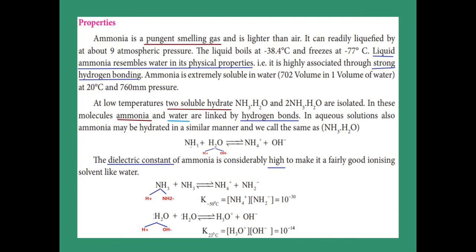Properties of ammonia: ammonia is a pungent-smelling gas. Liquid ammonia has similar physical properties to water — both have strong hydrogen bonds. Ammonia forms two soluble hydrates with water at low temperature: NH₃·H₂O (1 mole ammonia with 1 mole water) and 2NH₃·H₂O (2 moles ammonia with 1 mole water). Between ammonia and water, there is a hydrogen bond.